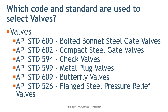API standard 594 covers design, material, face-to-face dimensions, pressure-temperature rating, examination, inspection, and test requirements for check valves with flanged, lug, wafer, and butt welding type ends. API standard 599 covers design for metal plug valves with flanged, threaded, and welding ends in sizes NPS 1 inch through NPS 24 inch. API standard 609 is for butterfly valves with double flange, lug, and wafer type.